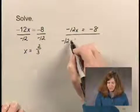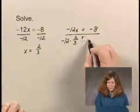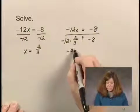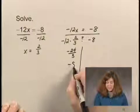So we have negative 12 times 2 thirds, and we want to know if that equals negative 8. Multiplying this gives us negative 24 thirds, which is negative 8.